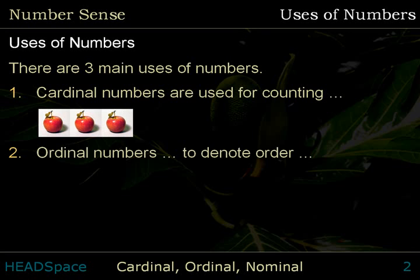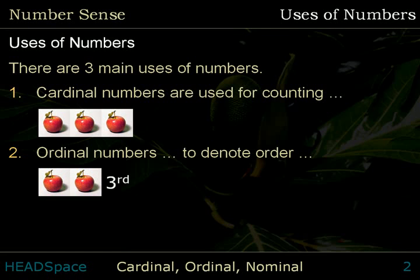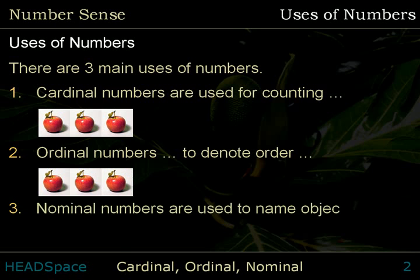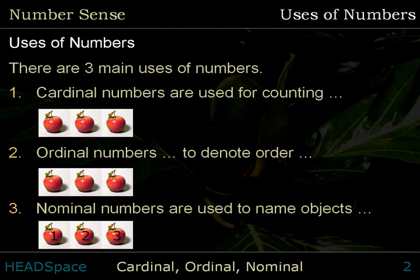Ordinal Numbers are used to denote the order of objects in a set: First, Second, Third. Nominal Numbers are used to name objects: Apple Number 1, Apple Number 2, Apple Number 3. In everyday life, there are three main uses of numbers.